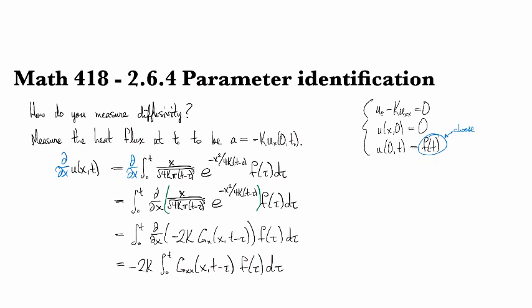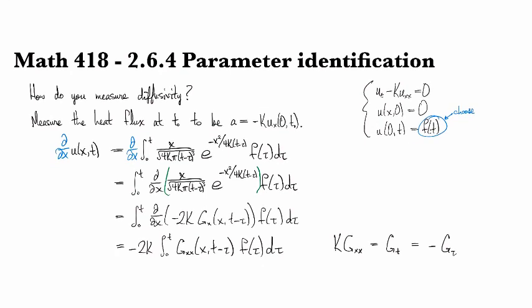But the heat kernel, remember, satisfies the heat equation. So k times gxx is equal to the time derivative gt, which is the negative, the derivative of g with respect to tau because of that minus sign in front of the tau. So that means that I can convert this into the integral g tau.